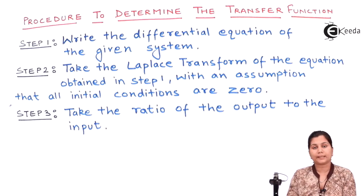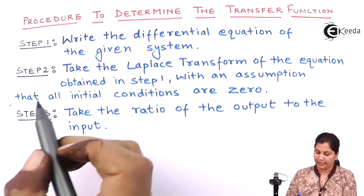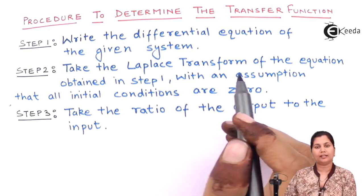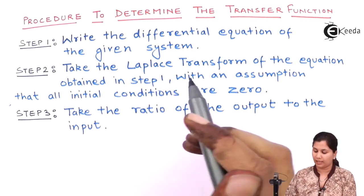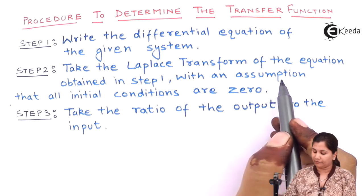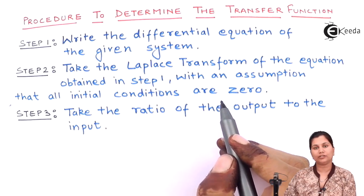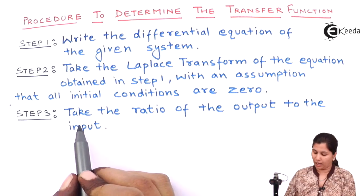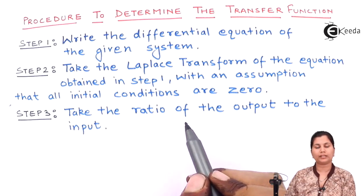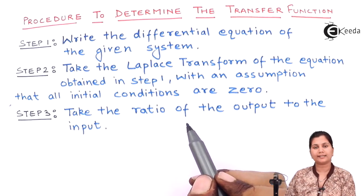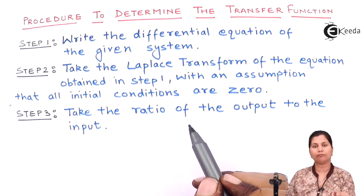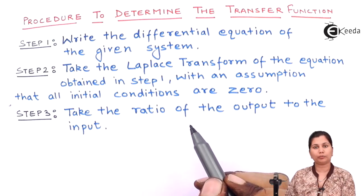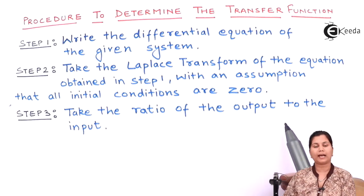In step 3, take the ratio of both sides — the output to the input. In the second step, you have taken the Laplace transform of the equation obtained in step 1 and assumed all initial conditions are zero. Now take the ratio of the output and the input. You have to first understand what is the output of the system and what is the input of the system, and then take the ratio of the output and the input.